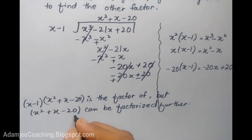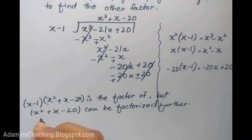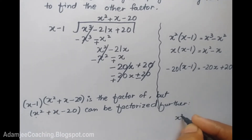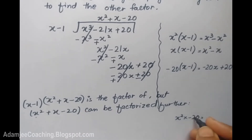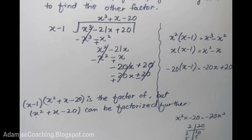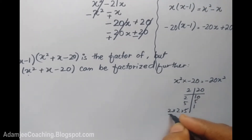So we are going to simplify the expression further. First term and last term — we will do middle term break. I have first term x squared and last term minus 20. So I need x squared times minus 20, which is minus 20x squared. The factors of 20 are 2 times 2 times 5.